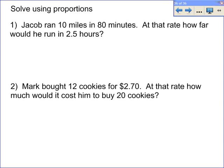On these two problems, you're asked to use a proportion to solve them. You've got to find two separate scenarios that have things in common. It says Jacob ran 10 miles in 80 minutes — that's a scenario, that's a rate. You can write that rate as 10 miles per 80 minutes. You could simplify it to 1/8 mile per minute, but you don't really need to.